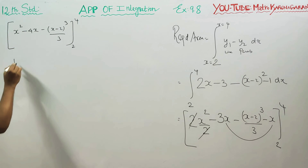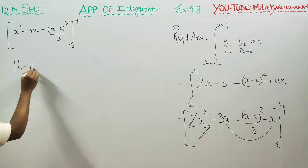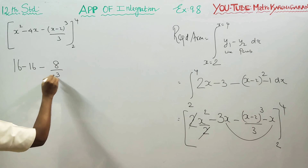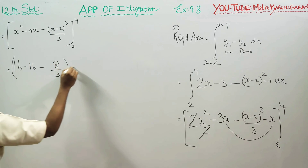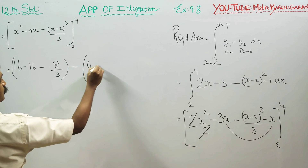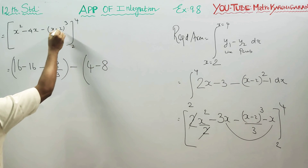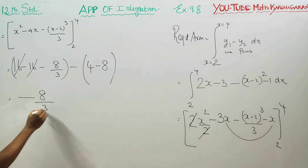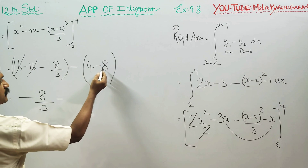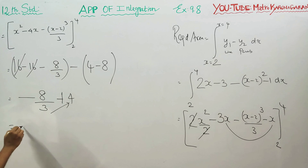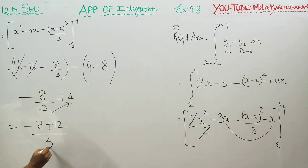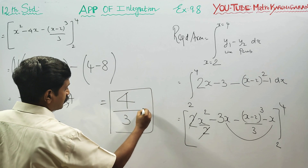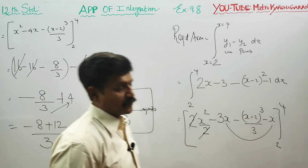Substituting upper limit 4: 4 squared is 16, minus 4 times 4 is 16, minus 4 minus 2 cube by 3, which is 8 by 3, giving upper value equal to minus 8 by 3. Substituting lower limit 2: 2 squared is 4, minus 4 times 2 is 8, and 2 minus 2 is 0. So 16 and 16 cancel, and we get minus 8 by 3 minus minus 4, which equals 4 by 3. The required area is 4 by 3 square units.